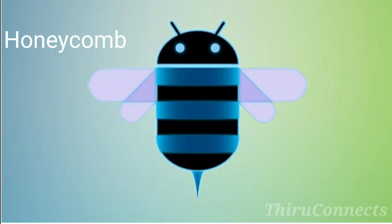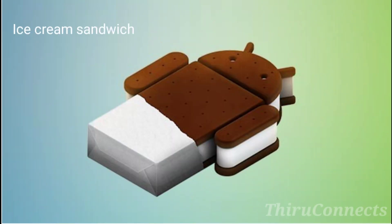Honeycomb was released February 22, 2011. This version introduced large screen and tablets support, along with smartphones design improvements.